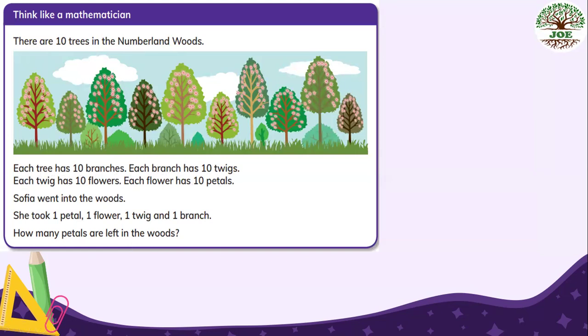So there are three steps to do. First step, we have to find the total amount of petals in the woods. And second step, we have to find the amount Sophia took. And the third step, we have to find how many left in the woods. So first step, total amount of petals are 10 trees, 10 branches, 10 twigs, 10 flowers, and 10 petals. So we have to multiply them together, five times of 10. So answer is one and five zeros. So we have 100,000 petals. This is total amount of petals in the woods.